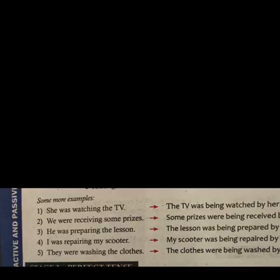'I was repairing my scooter' — here 'my scooter' is the object. Add the auxiliary verb was, then being, then the third form repaired, then by me: 'My scooter was being repaired by me.' 'They were washing the clothes' becomes 'The clothes were being washed by them.'